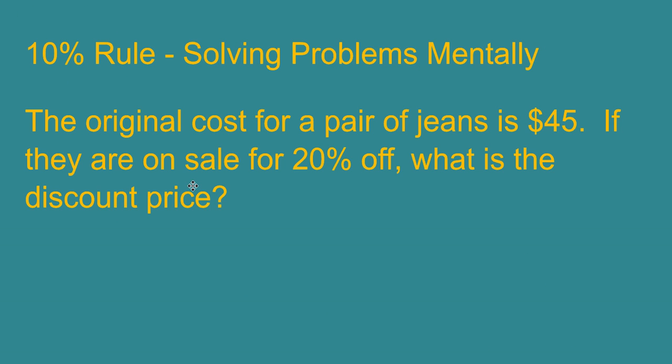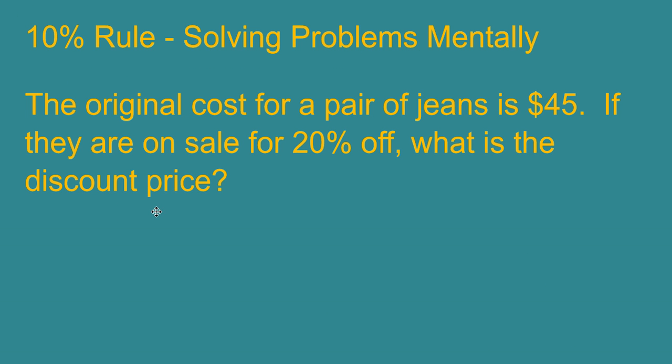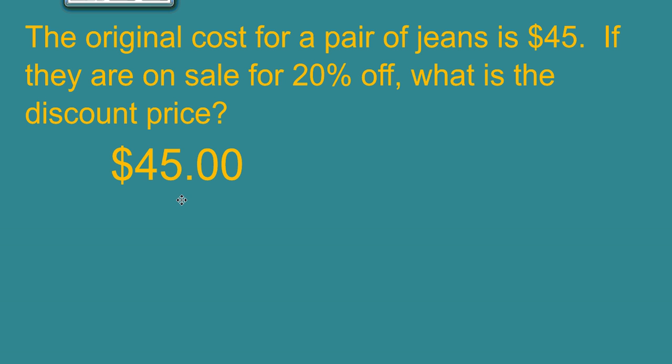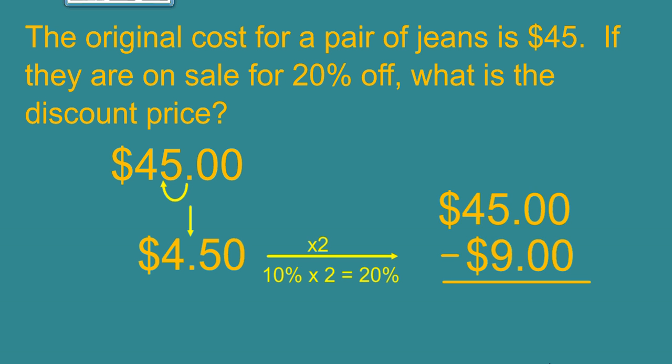Moving on to the next one. The original cost for a pair of jeans is $45. They are on sale for 20% off. What is the discount price? Again let's use the 10% rule and when we do this we can quickly find that 10% is $4.50. So 20% would be $9 and when we subtract that we get our answer of $36.